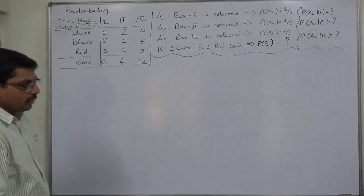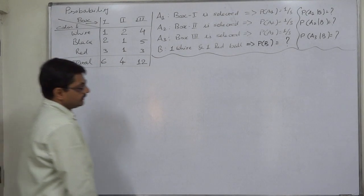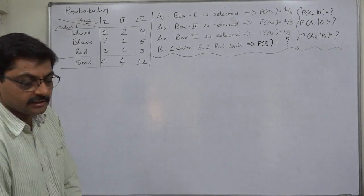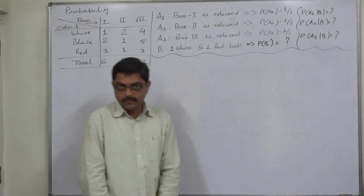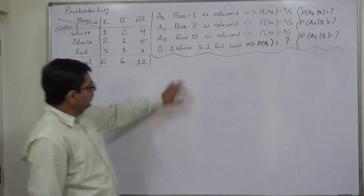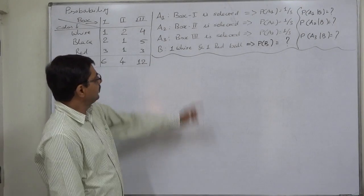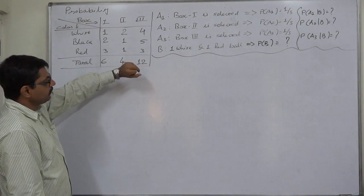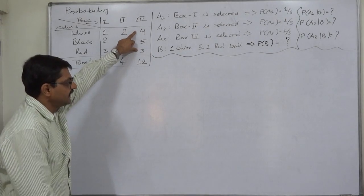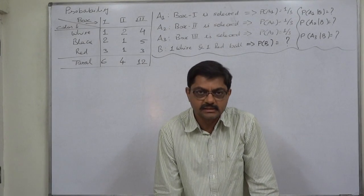One box is selected first, then two balls are drawn from it, and they happen to be one white and one red. What is the probability of those two balls coming from Box 1, Box 2, or Box 3? The event of selecting one white and one red ball is possible in three mutually exclusive ways: first box is selected and one white and one red ball drawn from it; second box is selected and one white and one red ball from it; or third box is selected and one red and one white ball from it.